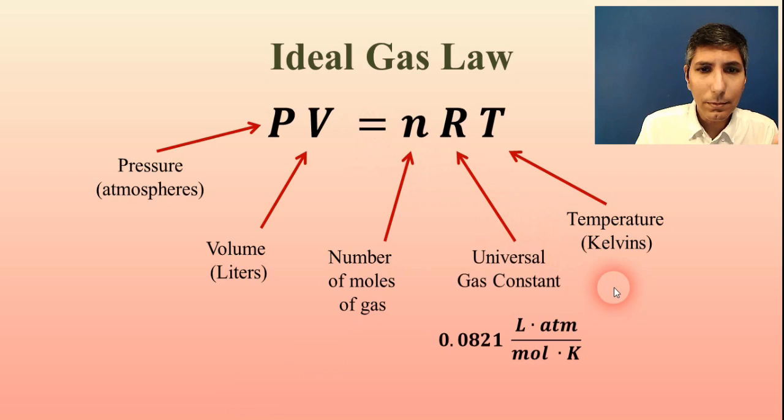And R represents the universal gas constant. And that value is equal to 0.0821 liter atmospheres per mole kelvin. Now depending on the textbook, they may write it as 0.08206 if you want to go out to four significant figures. But this is essentially the value for R.